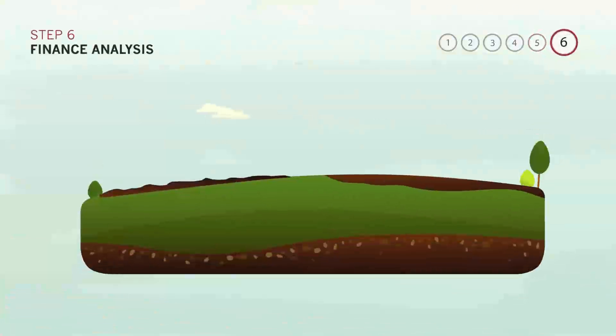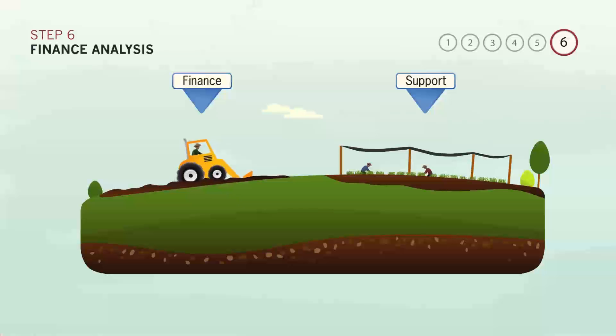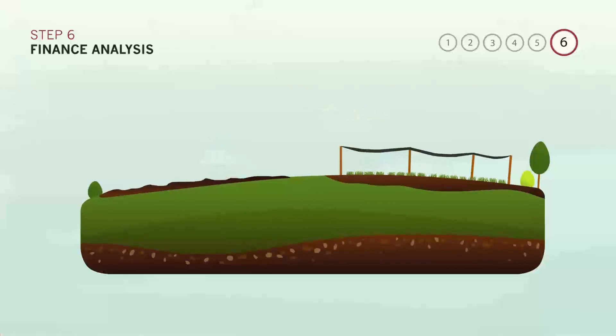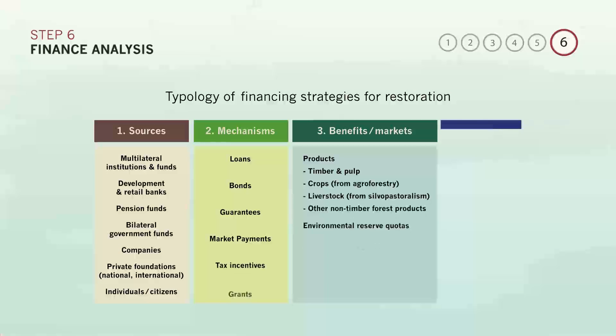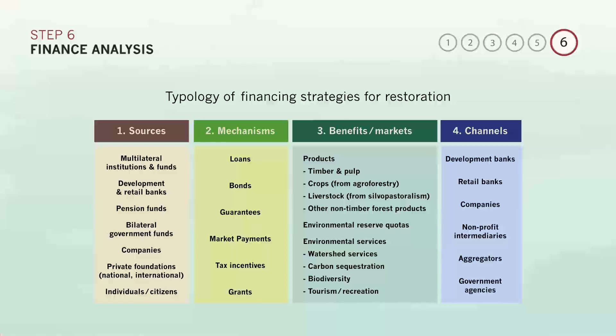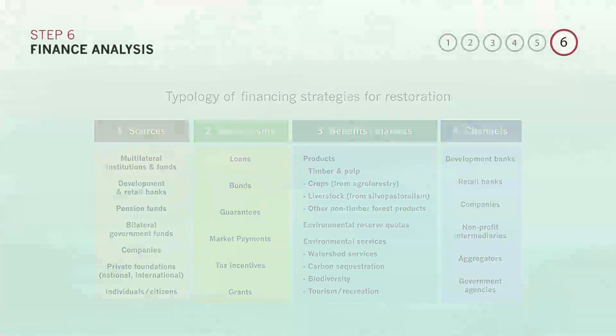The final of six potential analyses for ROAM is a consideration of the types of finance and resourcing that may be available to support restoration in your country or region. In particular, you may consider what kinds of funding may be most suitable for each of the restoration interventions identified by stakeholders as priority activities. For each restoration activity type, consider what the source of finance could be, what mechanism money would be delivered through, what restoration benefit or value the money would buy, and whether that money would be channeled through multiple sources.